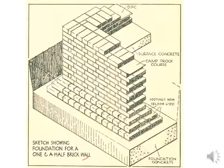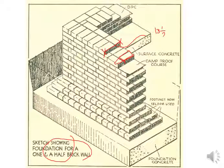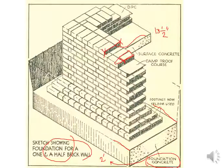This sketch shows the foundation for a one-and-a-half brick wall — 13.5 inches thick (one full brick plus one half brick). The foundation starts with a concrete base. Generally for houses, the concrete foundation base dimension is two feet to two and a half feet wide and six inches thick. Above the concrete, three bricks are placed (9 + 9 + 9 inches) and then steps are introduced from both sides.